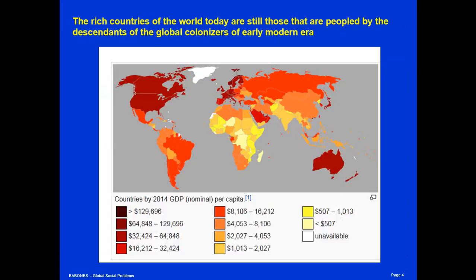Another amazing fact is that the rich countries of the world today are those that were already rich 200, or some would say even 400 years ago. In fact, the correlation between income per capita today and income per capita in the 1820s is around .96, which means that more than 90% of the total variability among countries in the world today in their levels of income can be explained by differences that were already apparent in the 1820s.